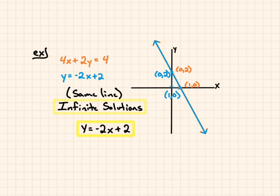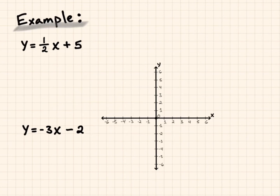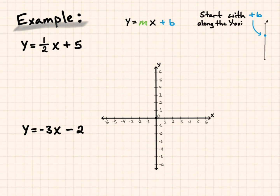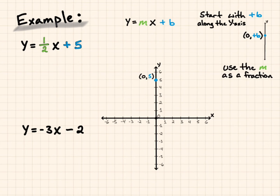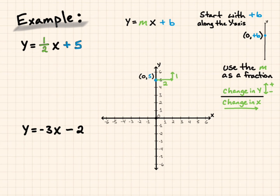You could also express the solutions as y equals negative 2x plus 2, written in slope-intercept form. These are the three different cases: one solution, no solution, and infinite solutions. Now let's try a practice example with one solution, graphing in slope-intercept form: y equals one-half x plus 5. We start with the y-intercept at positive 5 along the y-axis, then follow the slope of one-half — going up 1 in y for every 2 in x. We graph this line, making many dots to be precise.